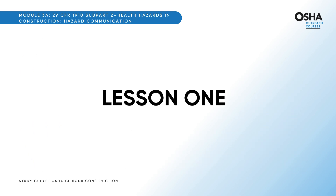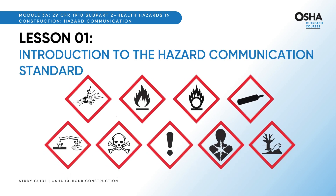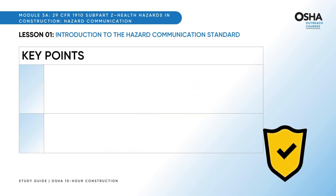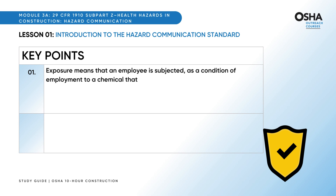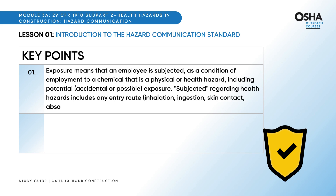Let's start with the first lesson, Introduction to the Hazard Communication Standard. The key points are: Exposure means that an employee is subjected, as a condition of employment, to a chemical that is a physical or health hazard, including potential, accidental, or possible exposure. Subjected regarding health hazards includes any entry route: inhalation, ingestion, skin contact, absorption, or injection.